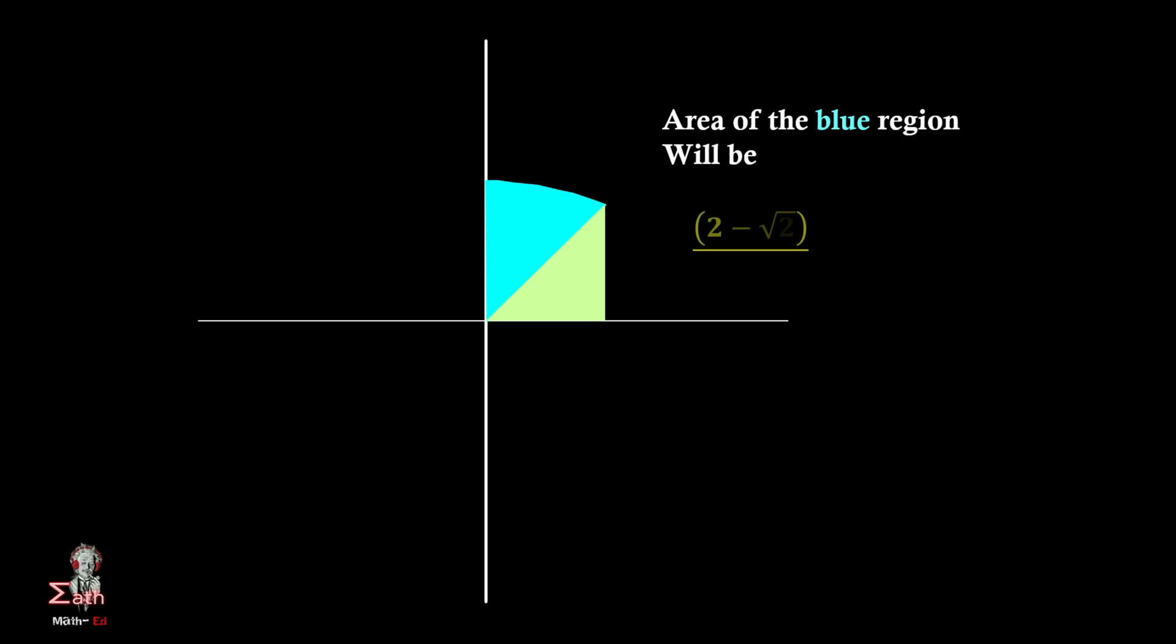So area of the blue region will be (2 - √2)/3 - (3 - 2√2)/2. So this will give us (4√2 - 5)/6.